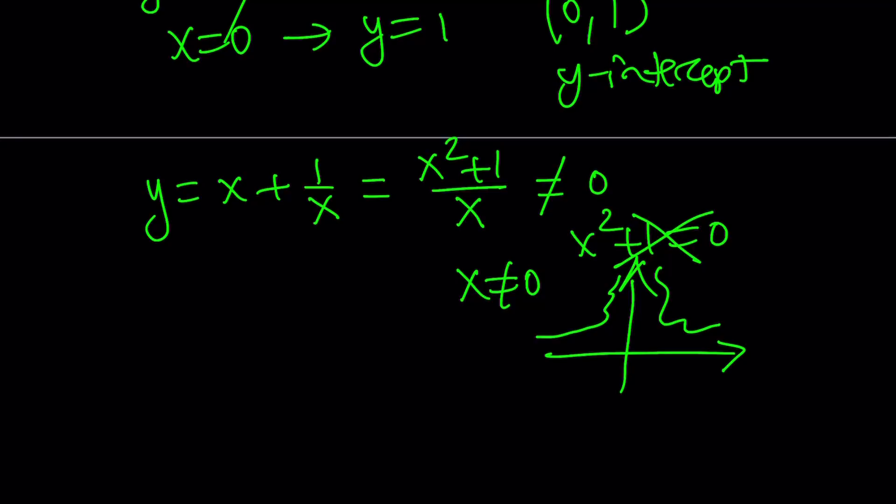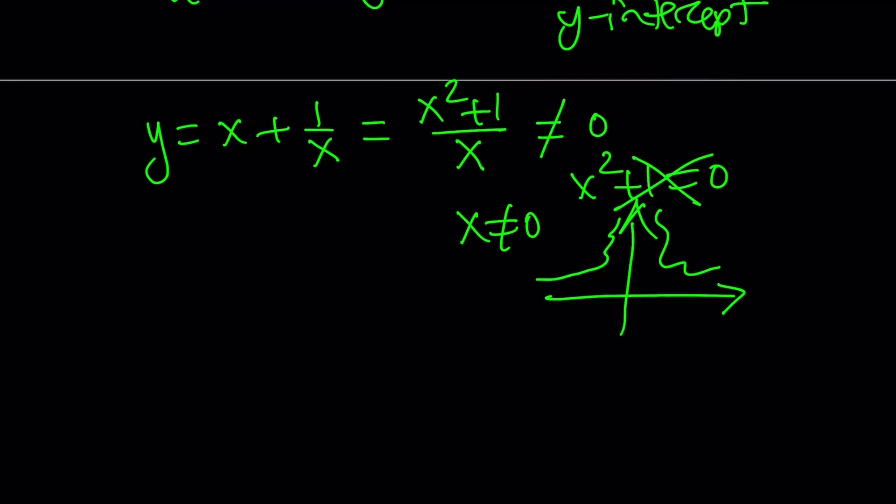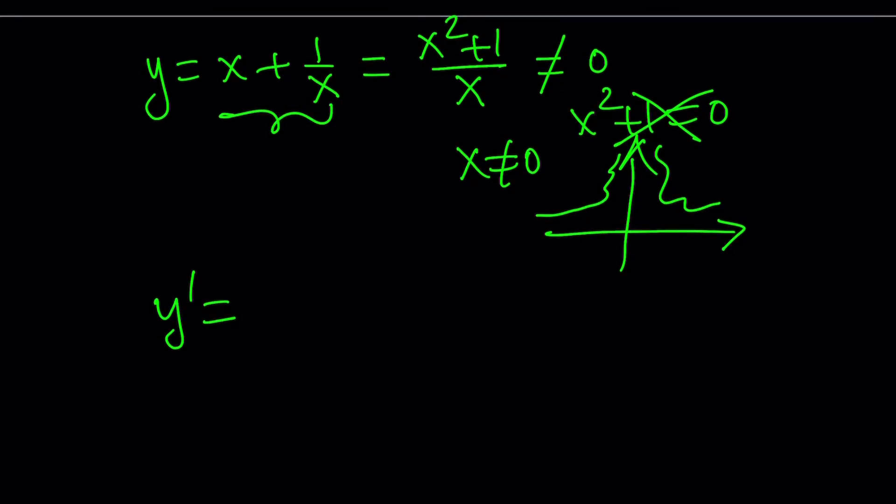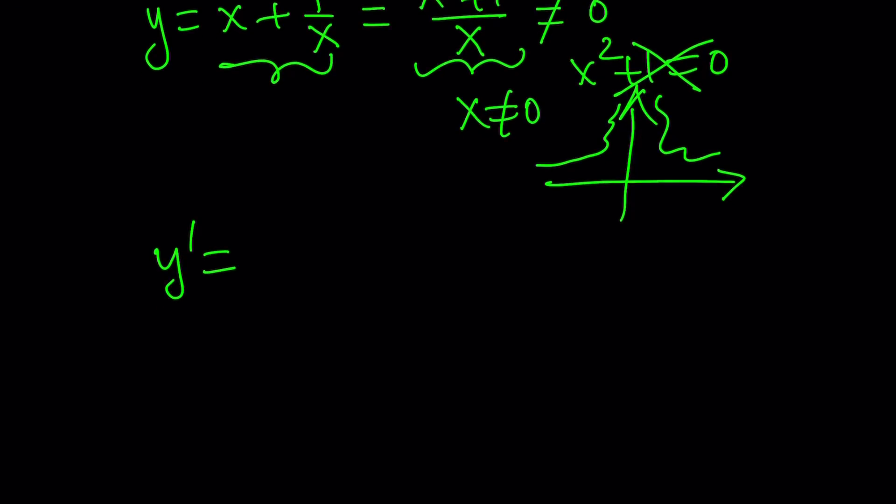Okay, but with this information, we're not ready to graph it because we're going to be looking at a couple other things, which is obviously the first derivative. So let's go ahead and differentiate this function. Now, you have two options here. Either differentiate this or use the quotient rule. I'm going to use the first one since it's easier. The derivative of x is 1. The derivative of 1 over x is negative 1 over x squared because you can write this as x to the power of negative 1.